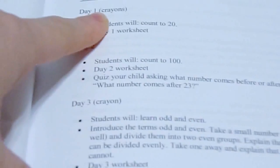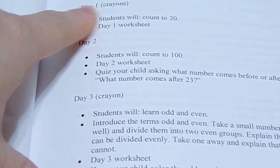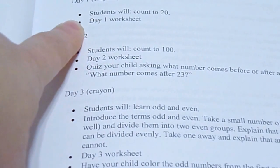Then it's divided by days. Beside the day will be your supplies. If there's no supplies needed there won't be anything there, but if there is it will be in parentheses by the day, and then she just has bullets.